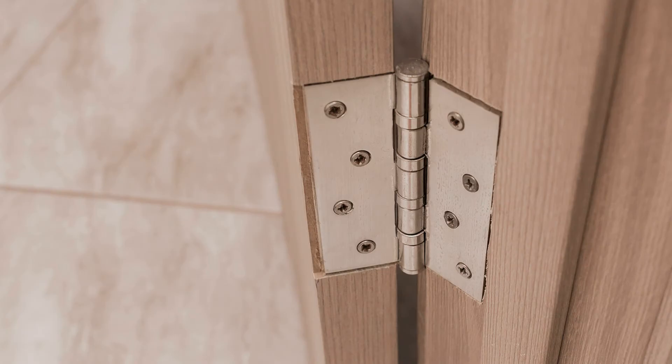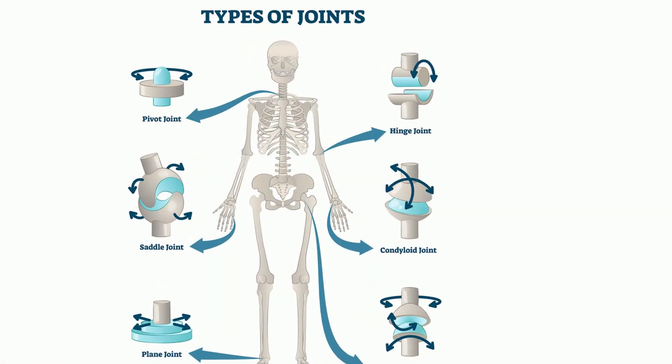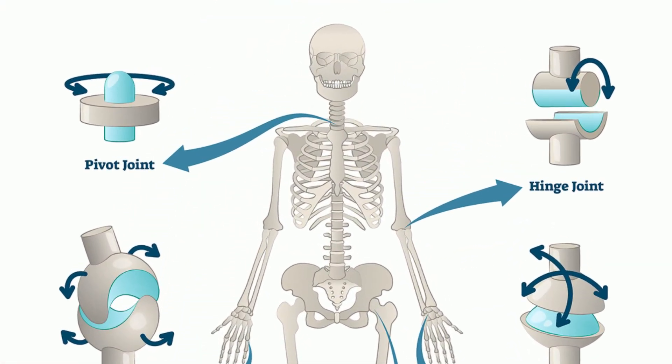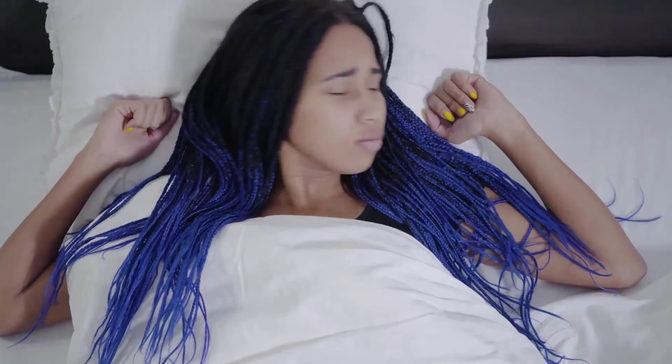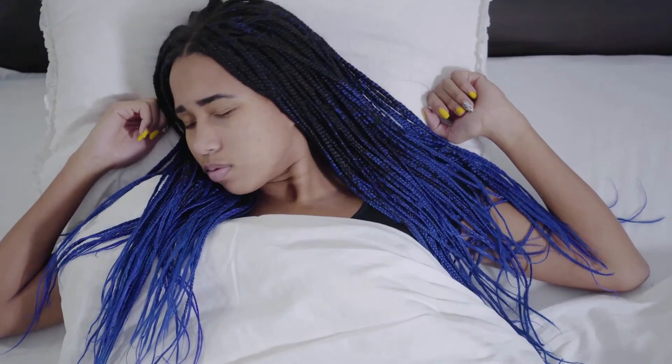Pivot joints consist of the rounded end of one bone fitting into a ring formed by the other bone. This structure allows for rotational movement as the rounded bone moves around its own axis. An example of a pivot joint is the joint of the first and second vertebrae of the neck, which allows for your head to move back and forth.